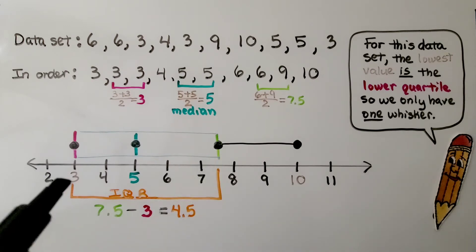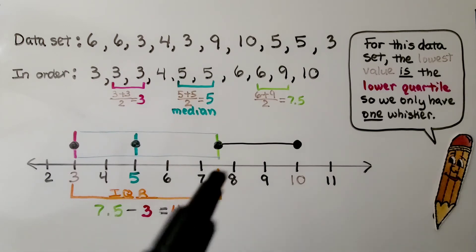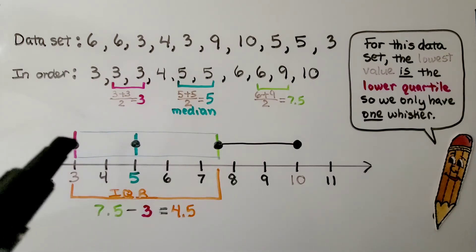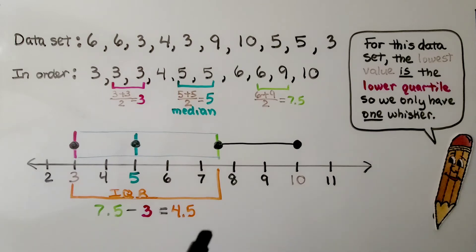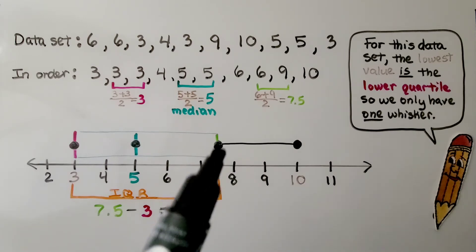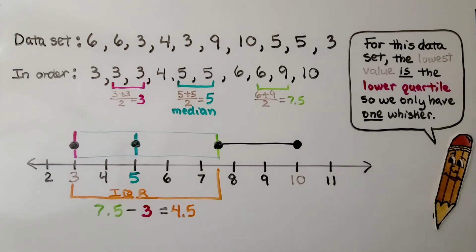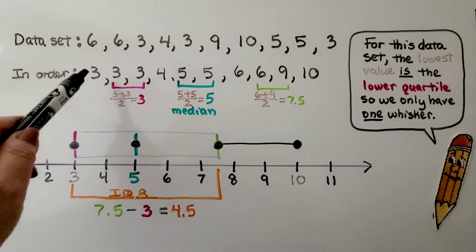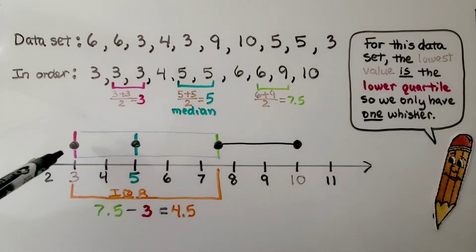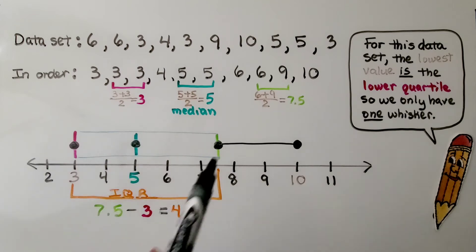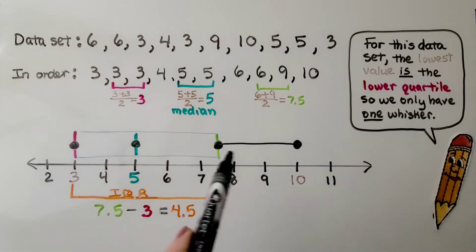The difference between the upper quartile and the lower quartile is the IQR. We have 7.5 and 3 — so 7.5 minus 3 is 4.5. Now, for this data set, the lowest value is the lower quartile, so we only have one whisker.